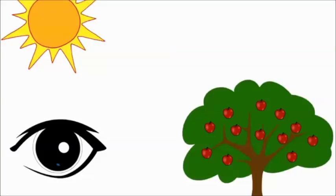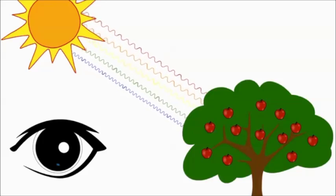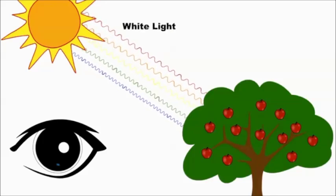We see colour through our eyes. Light from the sun has all colour waves in it — this is known as white light. Light comes from the sun and most of the colour waves get absorbed into the tree, except for the green colour waves which bounce off the tree and go into your eyes. This is why the tree looks green.